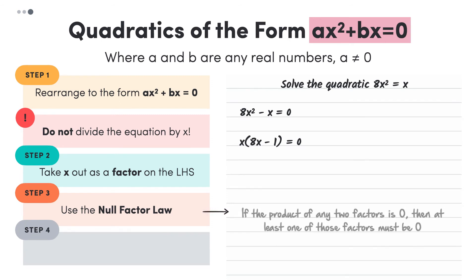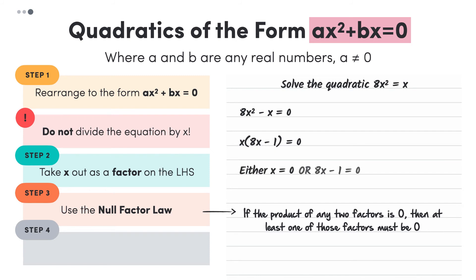In its most general form, the Null Factor Law says that if the product of any two factors is zero, then one or both factors must be zero. Applying this logic to our equation, we have two expressions that multiply together to equal zero. This means that at least one of the expressions must equal zero. So, either x could equal zero, or 8x minus 1 could equal zero.